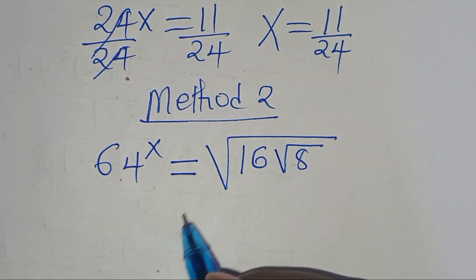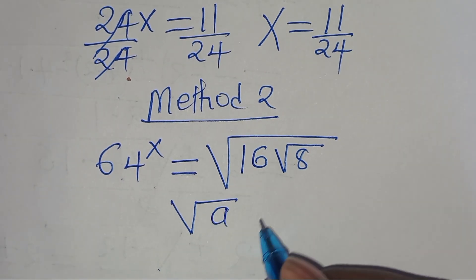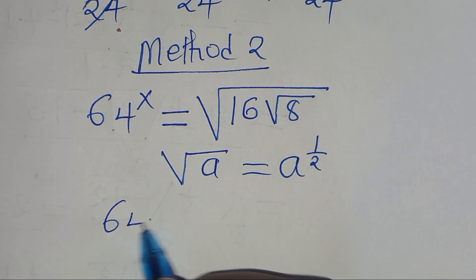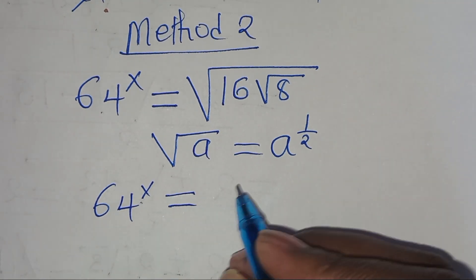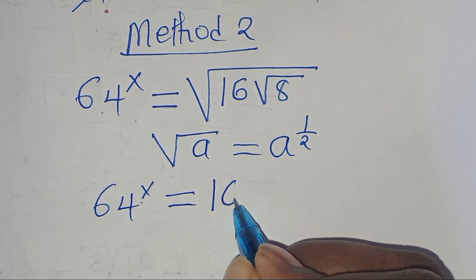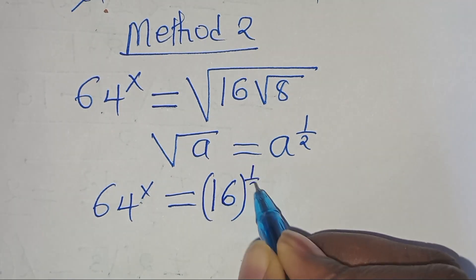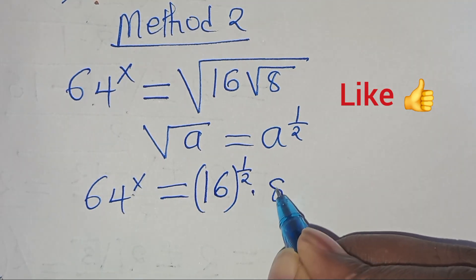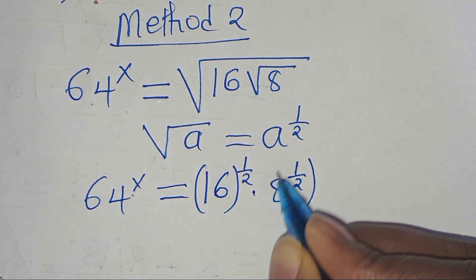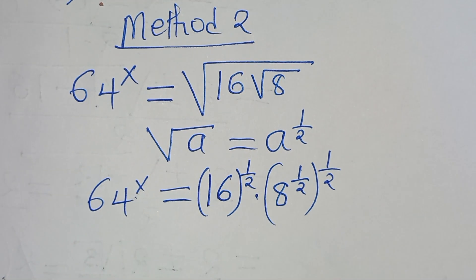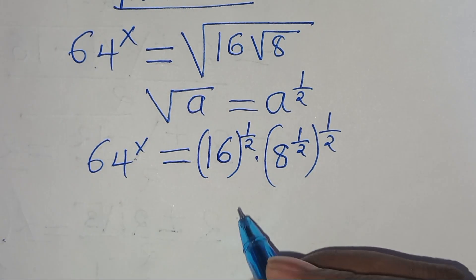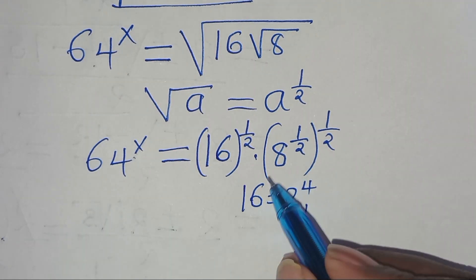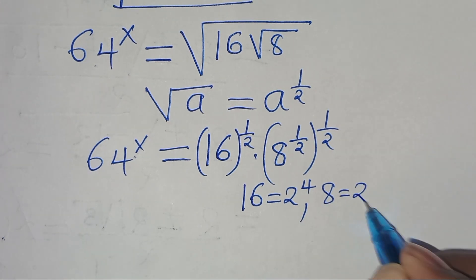Now, we can express: remember if you have square root of a, this is the same thing as a to the power of half. So applying this property, then we have 64 raised to the power of x, this is equal to 16 raised to the power of half, then multiplied by 8 raised to the power of half, then raised to the power of half. Remember, we can express 16 as 2 to the power of 4, and 8 is the same thing as 2 to the power of 3.